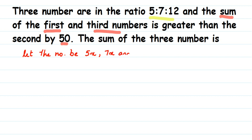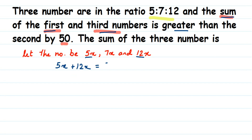So let the numbers be 5x, the second number 7x, and the third number 12x. From the question, the sum of the first and third number is 5x plus 12x. This whole sum is greater than the second number by 50, which means 5x plus 12x will be equal to 7x plus 50.